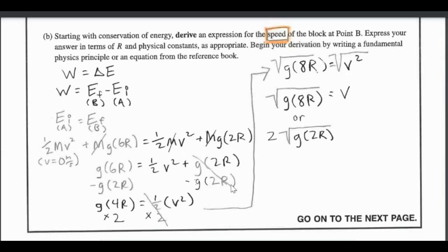All I did is subtract g times 2R from both sides which after I subtracted g(2R) from g(6R) I got g(4R) equals one half v squared. So multiply both sides by 2, bring it up here, square root it, and then I got a final answer of square root of g times 8R. If you wanted to pull out the 2 in front you could do that.